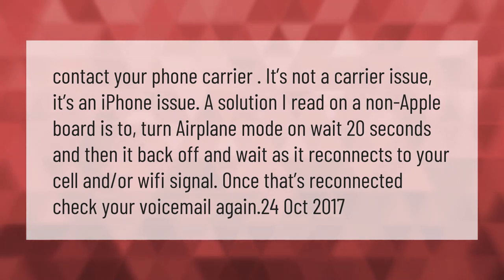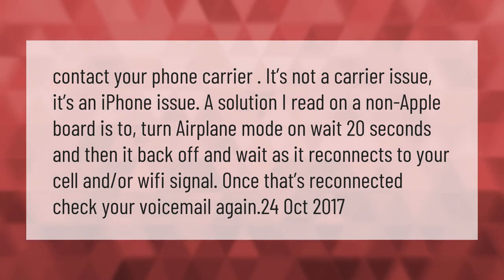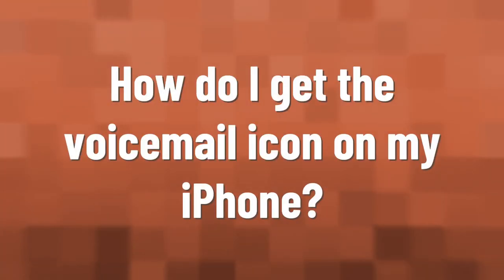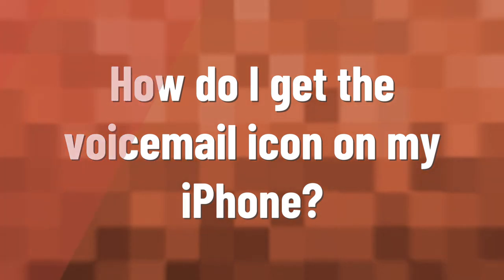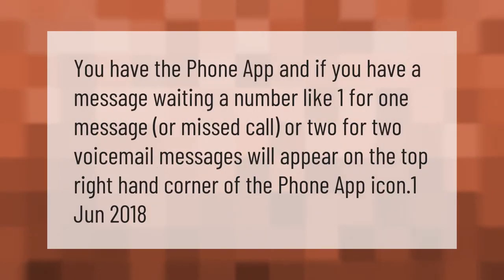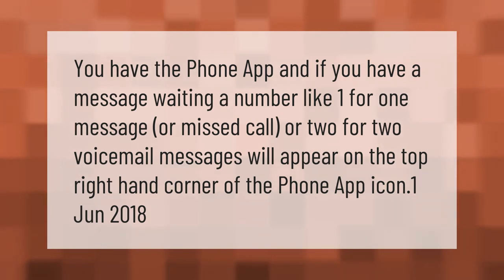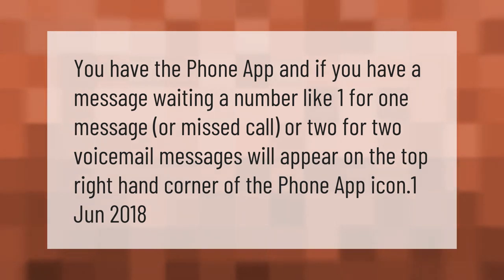In the Phone app, if you have a message waiting, a number — like one for one message or missed call, or two for two voicemail messages — will appear on the top right-hand corner of the Phone app icon.